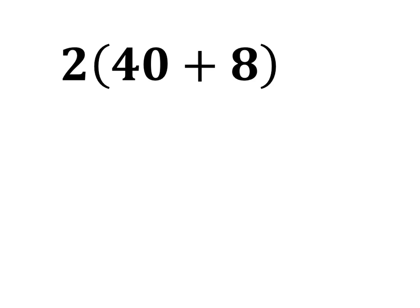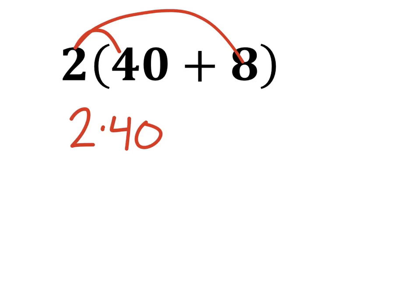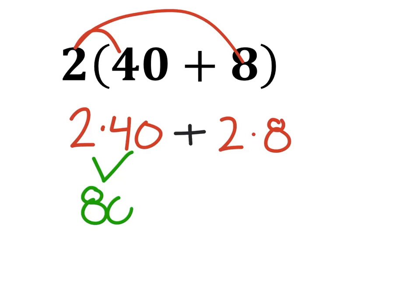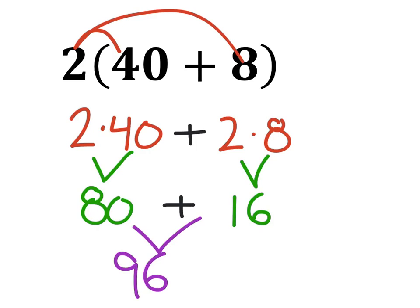For the next problem, using the distributive property: the first rainbow gives 2 times 40, and the second rainbow gives 2 times 8, and we're adding these together. No parentheses, no exponents, so multiplication: 2 times 40 is 80, and 2 times 8 is 16. Finally, 80 plus 16 is 96.